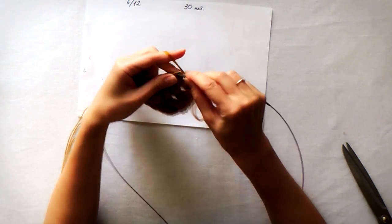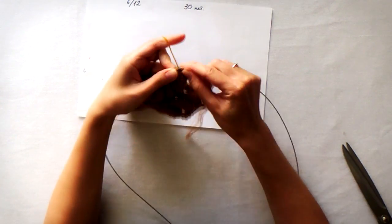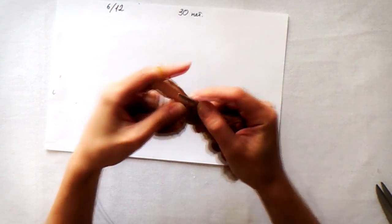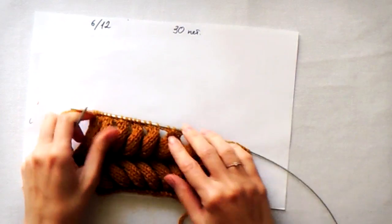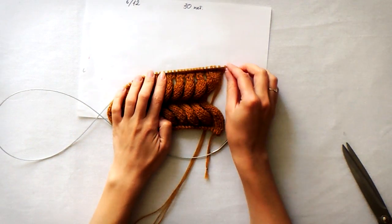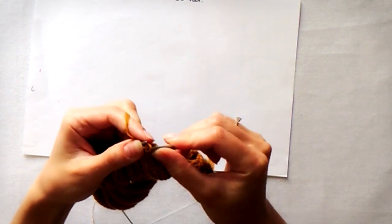The last thing is to make 2 full rows of stockinette. Now you can close your stitches and see the result.